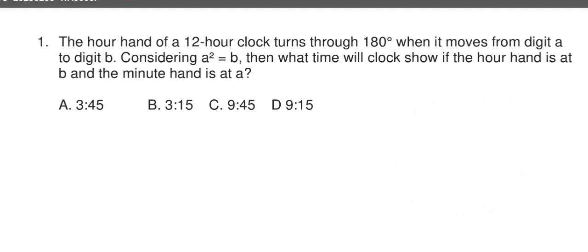The first question is: the hour hand of a 12-hour clock turns through 180 degrees. It moves from digit A to digit B. When A goes to B, how many degrees does it move? 180 degrees. Where will both be? Opposite side.